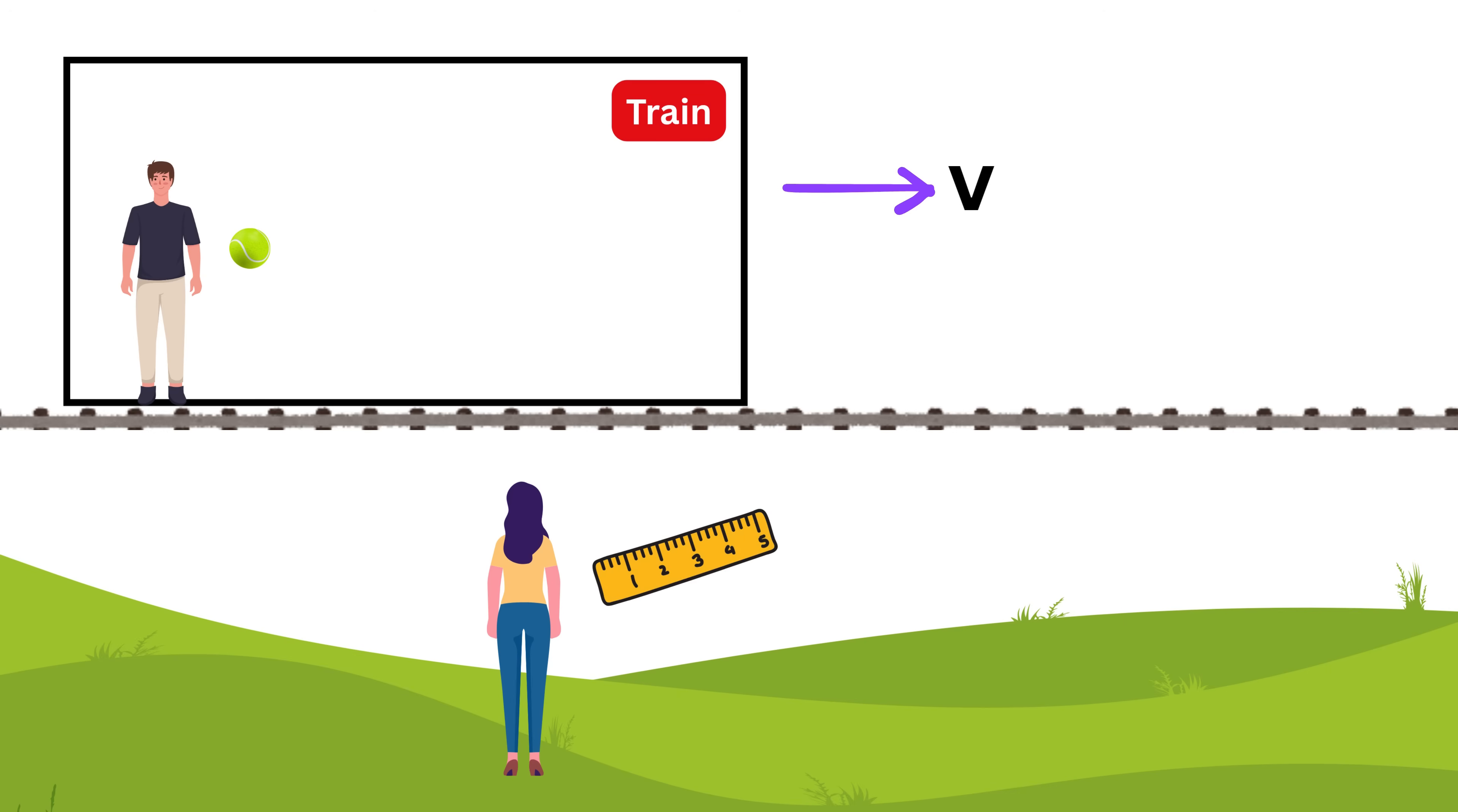Since they are in different frames, they will record different values for the same event. Let's say Alice uses a ruler to measure position and a clock to measure time. She calls the position of the event x and the time t.